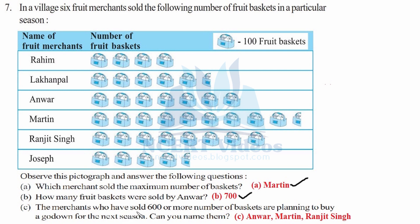Part C: the merchants who sold 600 or more baskets are planning to buy a godown for the next season — can you name them? We look for merchants with 6 or more complete pictures (each = 100). Counting: 100, 200, 300, 400, 500, 600 — we need 600 or more. We exclude Luck and Paul because they have a half picture, meaning approximately 550 baskets. The three merchants with 600 or more are Anworth, Martin, and Ranjeet Singh. This completes question 7.